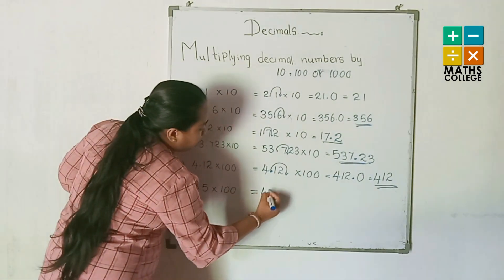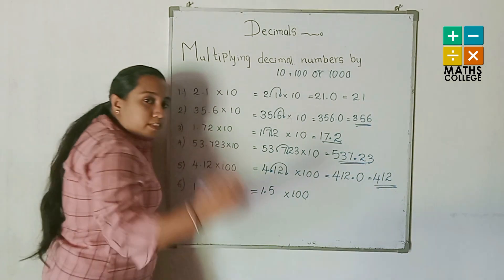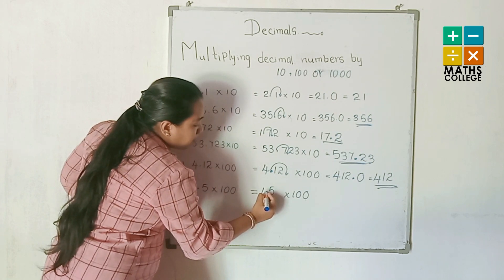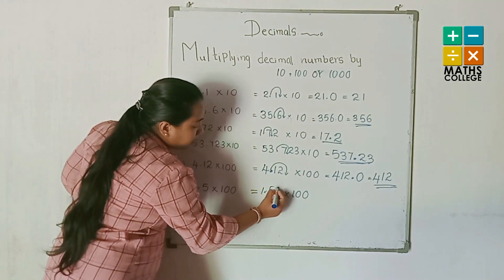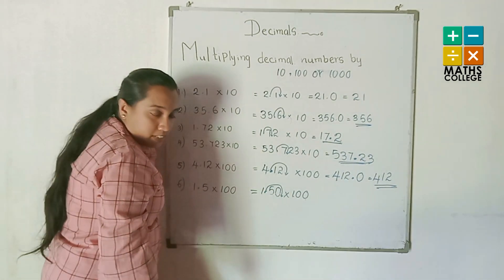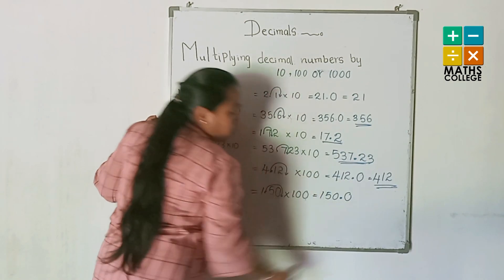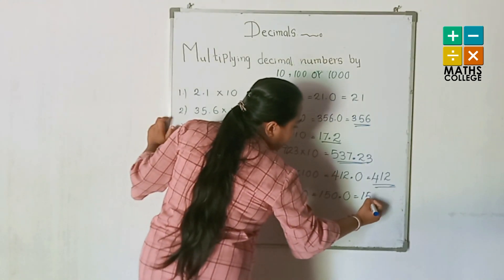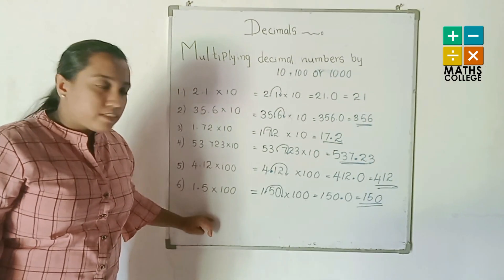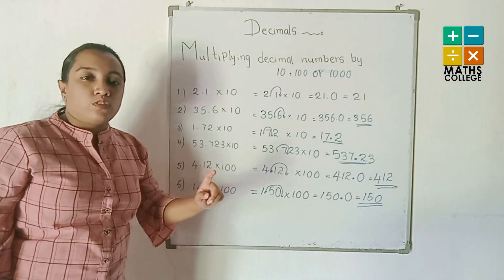Last ×100 example: 1.5 multiplied by 100. One hundred has two zeros, so the decimal point jumps two places. There is no digit in the second place, so we put a zero — 1.5 becomes 150.0. No decimal place numbers remain, so the answer is written as 150. This covers all examples of multiplying decimals by 10, 100, and 1000.